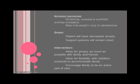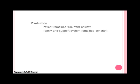By family, we're not just meaning children or blood relatives, but any significant others in her life at this point. In evaluating, we see that our patient has remained free from anxiety and continues to have family and support systems that remain constant. This shows that her adaptation continues to be integrated, which is the highest level of adaptation we can achieve.